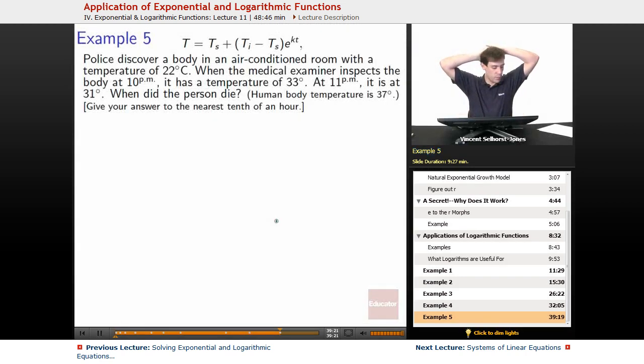Final example, this one's going to be a little bit of a doozy, but this is about as hard as you'll wind up seeing any of this sort of stuff get. Police discover a body in an air-conditioned room with a temperature of 22 degrees Celsius. When the medical examiner inspects the body at 10 p.m., it has a temperature of 33 degrees. At 11 p.m., it is at 31 degrees. When did the person die? We're also told that human body temperature is 37 degrees, and to give our answer to the nearest tenth of an hour.